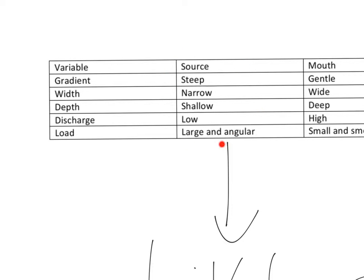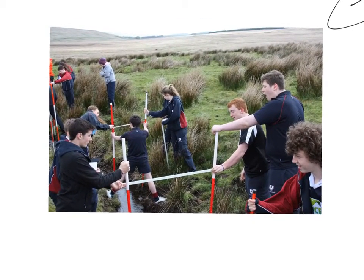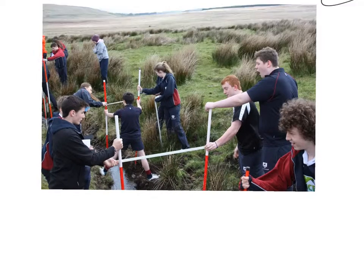This little list here shows the characteristics at the source, so steep gradient, narrow width, shallow depth, low discharge and that the load is large and angular. Referring back to this picture, you can see all of those characteristics here. Obviously things like load and that aren't as easy to see.